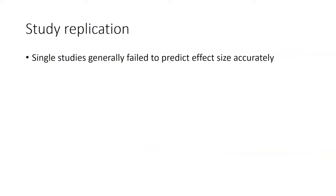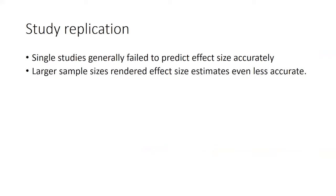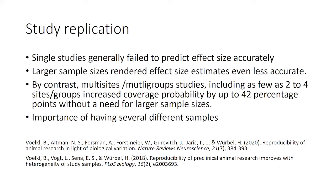Study replication is very important. Single studies generally fail to predict effect size accurately and produce a large number of false positives or false negatives. Larger sample sizes also render effect size estimates less accurate. However, multi-site or multi-group studies including as few as two to four sites or groups increase coverage probability by up to 42 percentage points without needing larger group sizes. It is therefore important to observe several groups and several sites to allow generalization of your results.